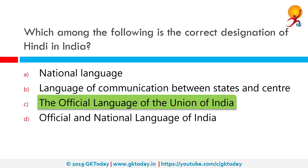The prospect of the changeover, however, led to much alarm in the non-Hindi-speaking areas of India, especially Dravidian-speaking states whose languages were not related to Hindi at all. As a result, Parliament enacted the Official Languages Act in 1963, which provided for the continued use of English for official purposes along with Hindi even after 1965.